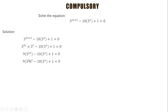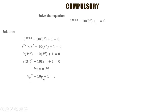So if we replace 3^x with p, we obtain the quadratic equation 9p² minus 10p plus 1 equals 0.